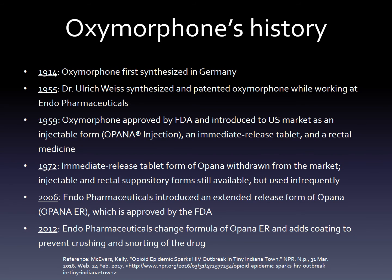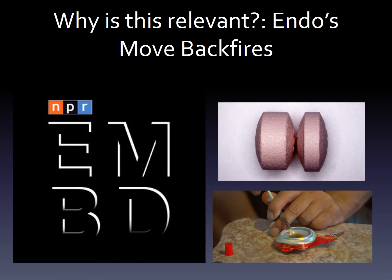However, the drug company found that addicts were still able to find ways to abuse the drug by crushing and snorting it. In response to this, in 2012, Endo changed the formula of Opana ER and added a crush-resistant coating to prevent people from snorting the drug. However, this measure was not as effective as the drug company had hoped.